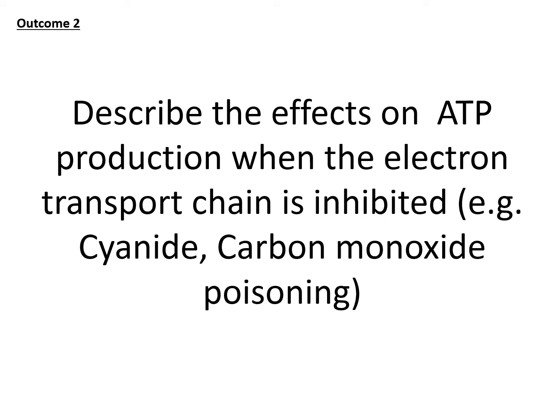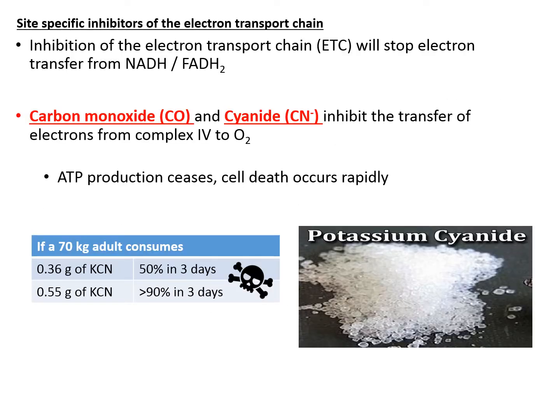In our second learning outcome, we will look at what will happen when the electron transport chain is inhibited by poisonous compounds such as cyanide and carbon monoxide. When the ETC is being inhibited, you will stop getting electrons from either NADH or FADH2 or both. Carbon monoxide and cyanide can block the transfer of electrons from complex 4 to the oxygen molecule, which is the final electron acceptor. As this happens, ATP production ceases and cell death could occur very rapidly.